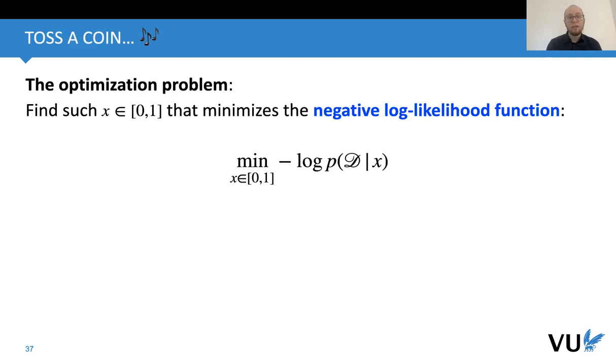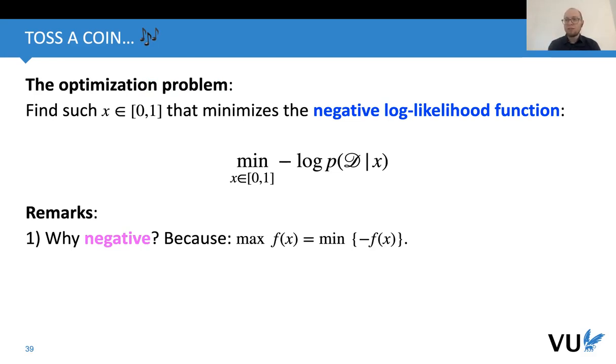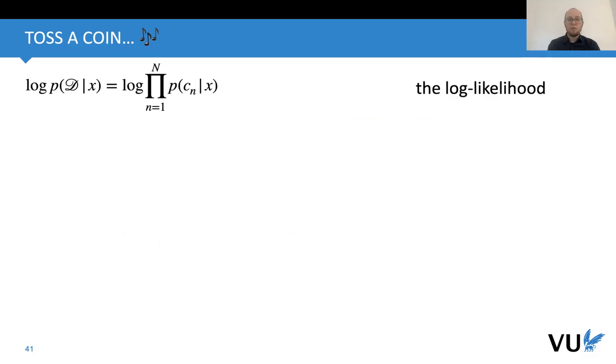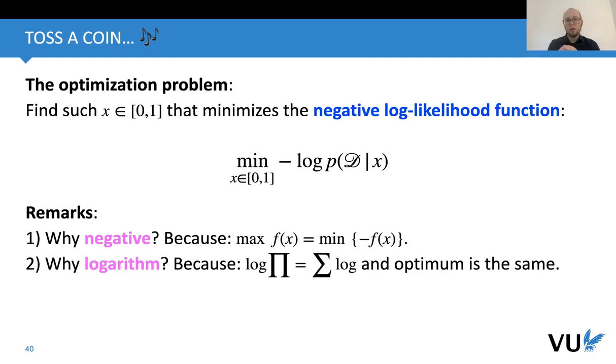Now we can formulate the optimization problem because we want to find such x that minimizes the negative log-likelihood function. Why negative log-likelihood? Why negative? Because optimizers seek for minimum rather than maximum—this is just a convention. So if we want to change a maximization problem to a minimization problem, we just need to take the negative sign. Why logarithm? First of all, because it doesn't change the optimum. Second, it has a really nice property that log of product will give us the sum of logarithms. We will use this extensively as well.